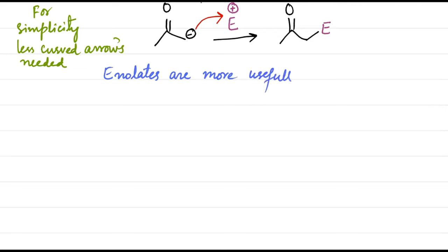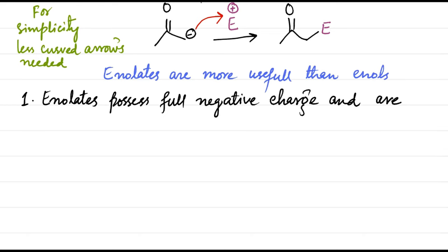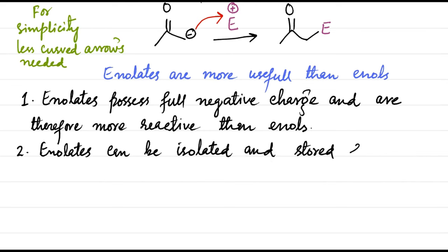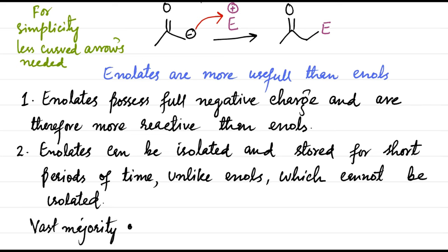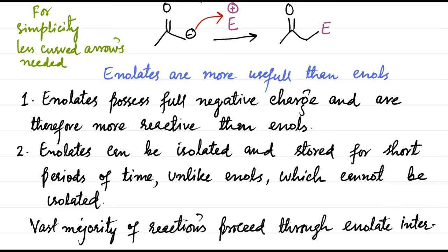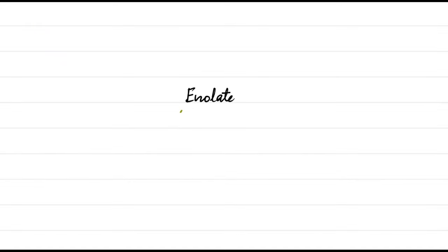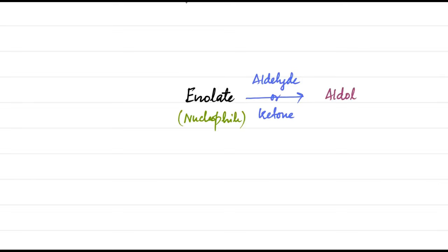Enolates are more useful than enols because enolates possess a full negative charge and are therefore more reactive than enols. Enolates can be isolated and stored for short periods of time, unlike enols, which cannot be isolated or stored. Thus, the vast majority of carbonyl reactions proceed through enolate intermediates. Enolate itself is a great nucleophile and is very reactive with electrophiles such as aldehydes or ketones — which gives us the aldol reaction.